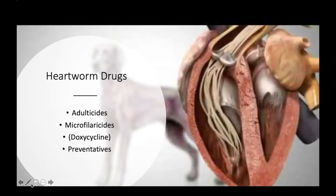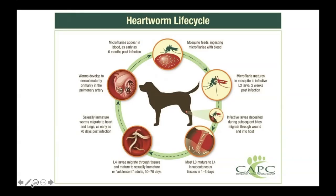We'll start off with heartworm drugs. When talking about heartworm drugs, we're focusing on mainly three classes of drugs plus doxycycline: adulticides, microfilaricides, and heartworm preventatives. Doxycycline, which we've talked about previously as a tetracycline antibiotic, will be discussed again because it supports the heartworm killing process.